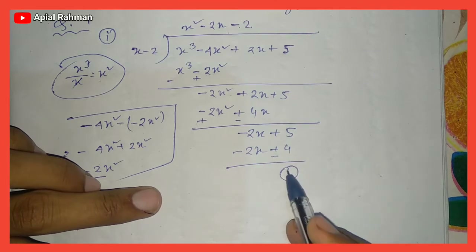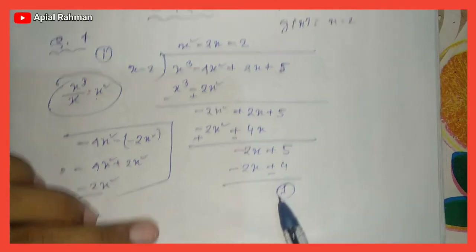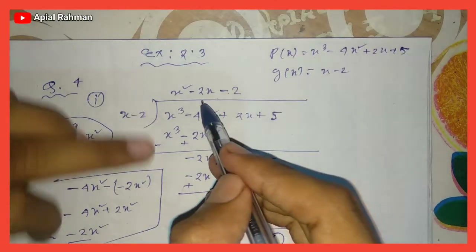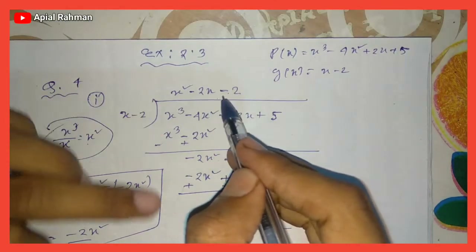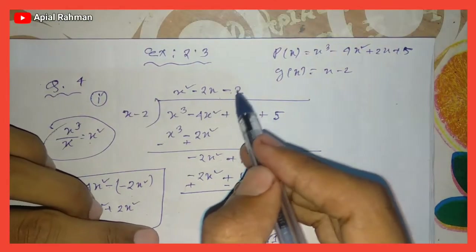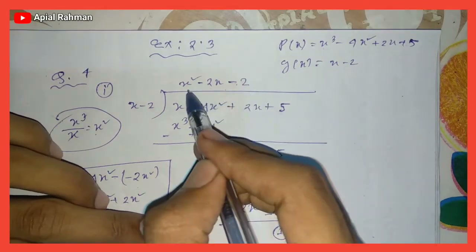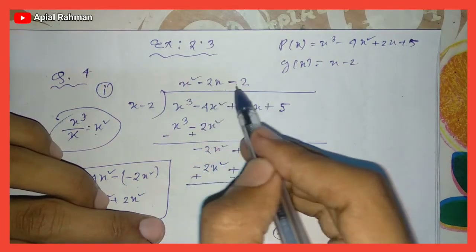Remainder is 1. Quotient is x squared minus 2x minus 1.